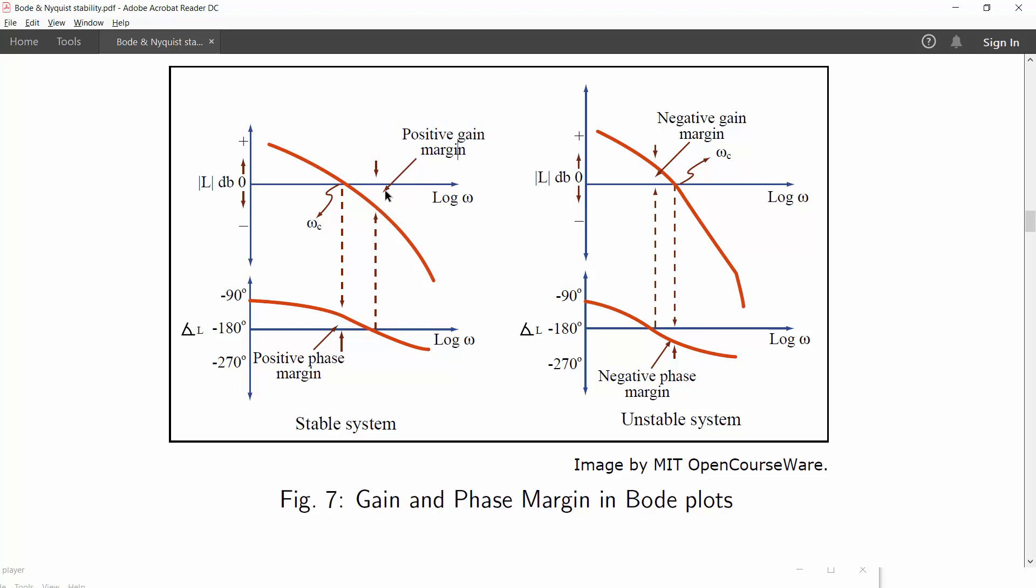The gain margin is measured positive below the 0 dB line and negative above it, while phase margin is measured positive above 180 degree line and negative below it. So the first case shown here is stable since both the phase margin and the gain margin are positive, while the second case has both gain margin and phase margin negative, hence the system becomes unstable.